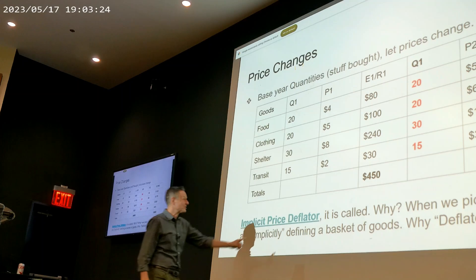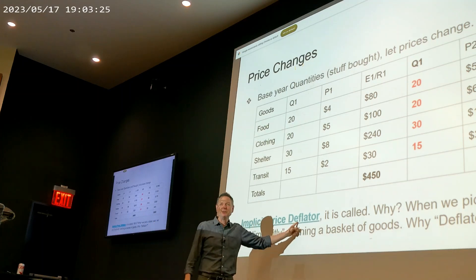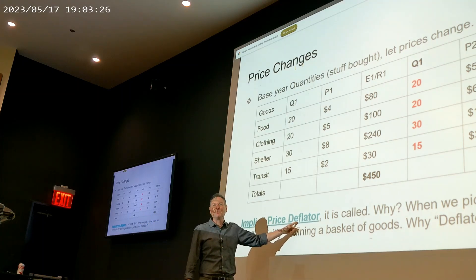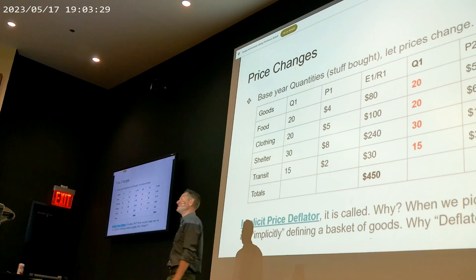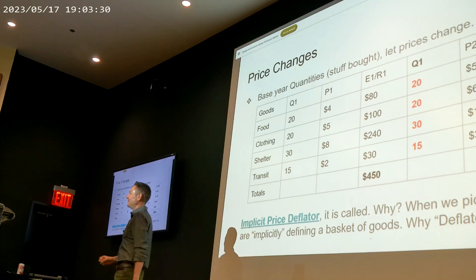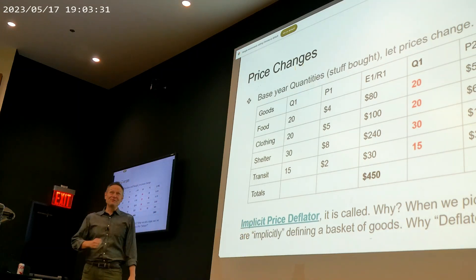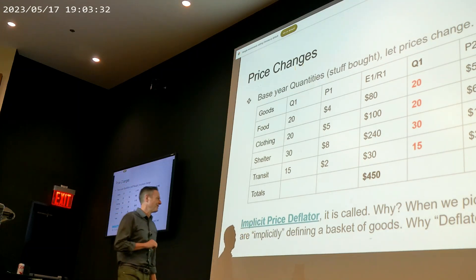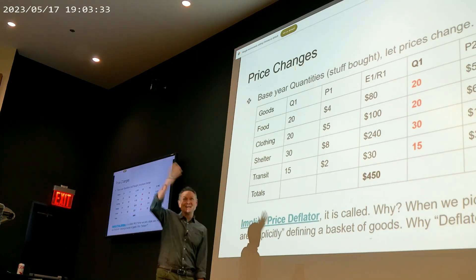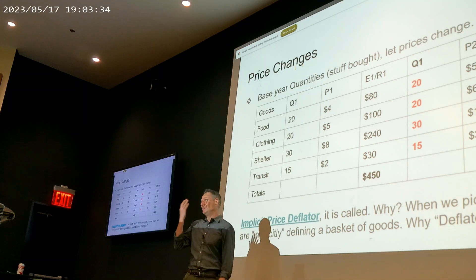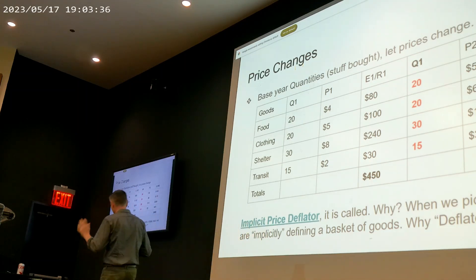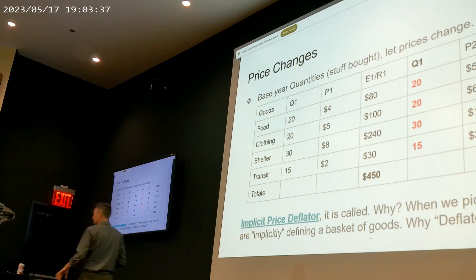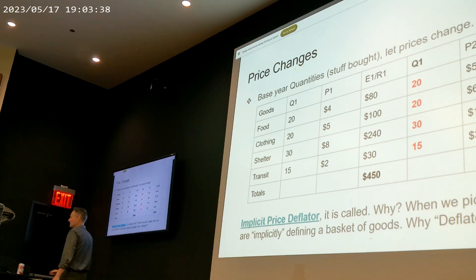This is the so-called implicit price deflator. When we calculate GDP and think about the amount of stuff produced in a given year at that year's prices, we've also implicitly defined a way of calculating how much prices have changed over time — using that fixed quantity basket. It's called a deflator because one of the things we can do is deflate or inflate values to make nice year-over-year comparisons.